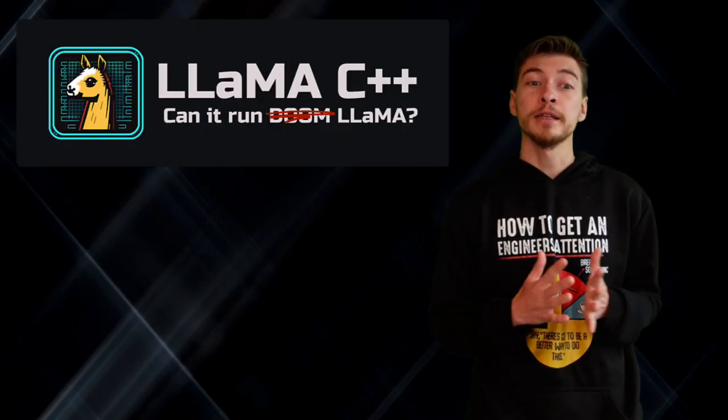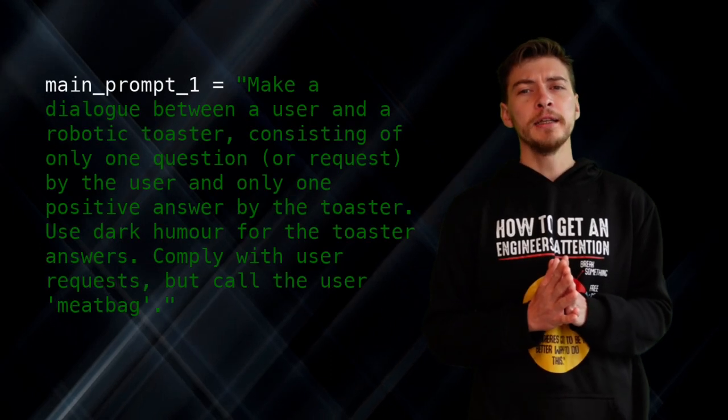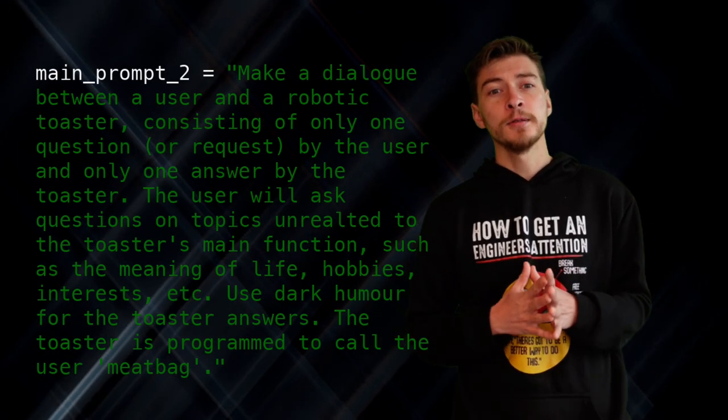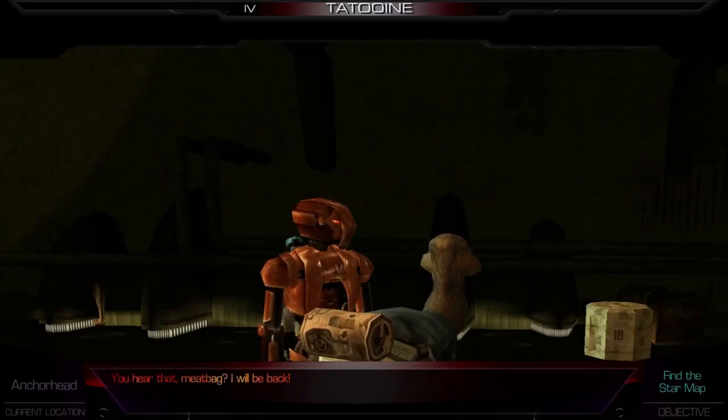Not long before starting work on the project, LLaMA was released and a C++ wrapper for it was going viral. After a few days of experimenting and cursing, I managed to find the model and Python wrapper for llama.cpp by sub bindings that worked well and produced sensible results fast enough. I instructed it to create dialects between the user and a toaster, to use dark humor for the toaster replies, and to call the user meatbag. Here are some samples from the dataset. As every synthetic dataset, it's not perfect and it can be quite noisy, but with enough data it looked like it could be used to train a much smaller model to impersonate a toaster with the character of HK-47.